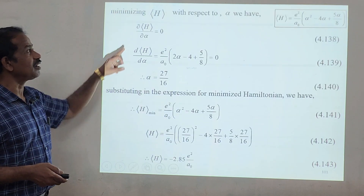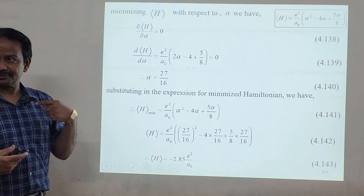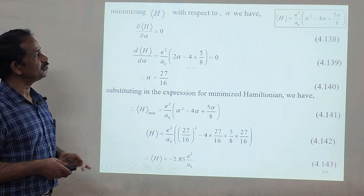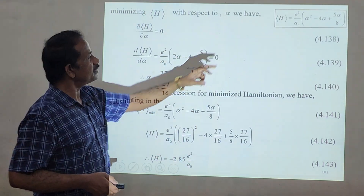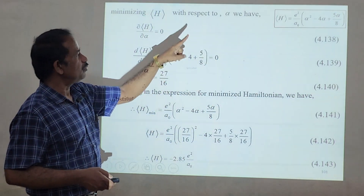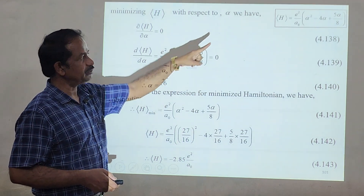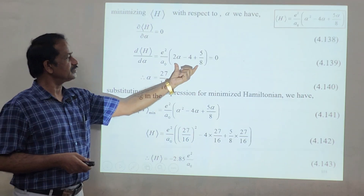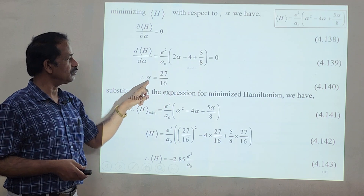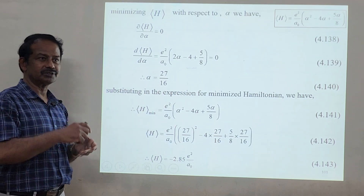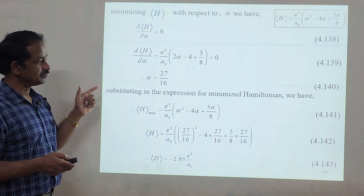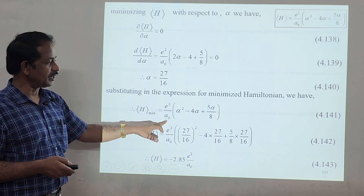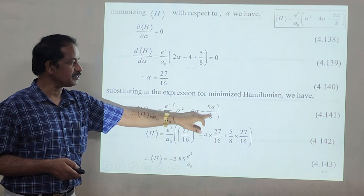We now minimize the Hamiltonian by differentiating with respect to alpha and setting dH/d-alpha = 0. Differentiating gives 2 alpha − 4 + 5/8 = 0. Simplifying this yields alpha = 27/16. Substituting this value back into the expression for H minimum gives H_min = (e²/a0)[alpha² − 4 alpha + (5/8) alpha] evaluated at alpha = 27/16.